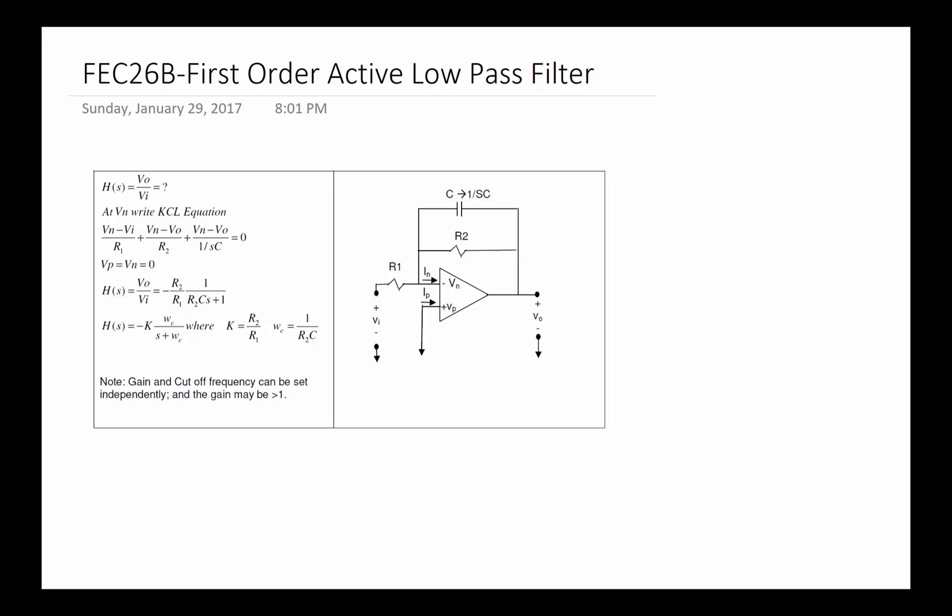In this video we're going to talk about first-order active low-pass filters. If you remember the ideal definition of a low-pass filter, it has the magnitude of H(s) such that the signal will pass through below a certain frequency Omega_C.